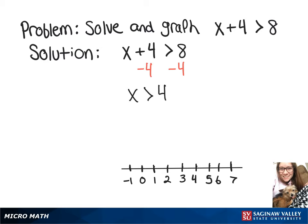So in interval notation down here, we're going to do parenthesis 4, infinity, parenthesis. And then on this graph, we're going to do an open circle on the 4, and then an arrow pointing up to infinity.